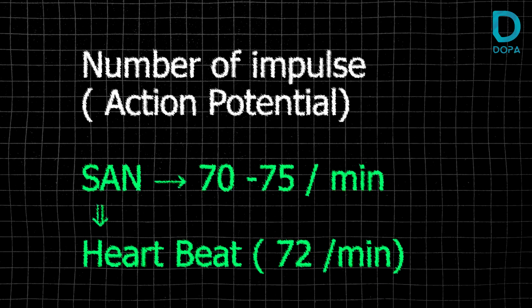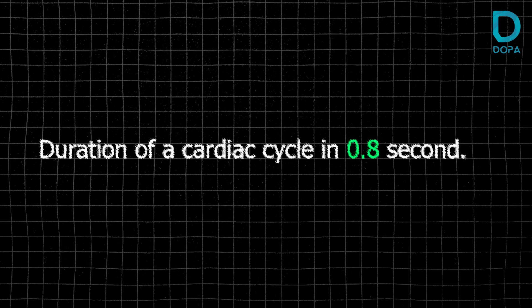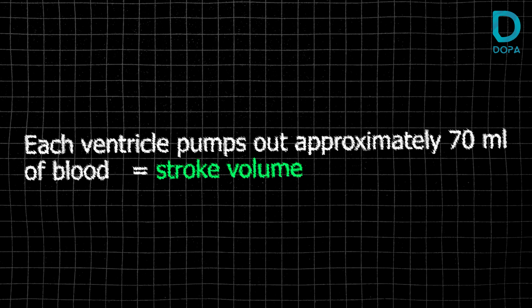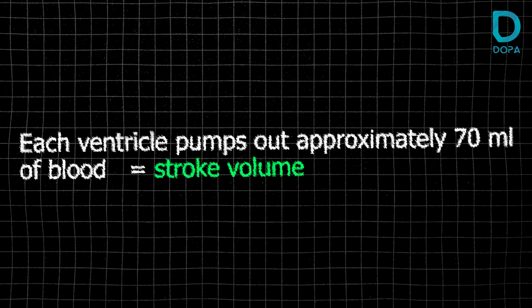The normal heartbeat is 72 beats per minute. One cardiac cycle is 0.8 seconds. The stroke volume per cardiac cycle is 70 ml of blood. The cardiac output is 70 ml multiplied by 72, which gives approximately 5,000 ml, that is 5 liters per minute.